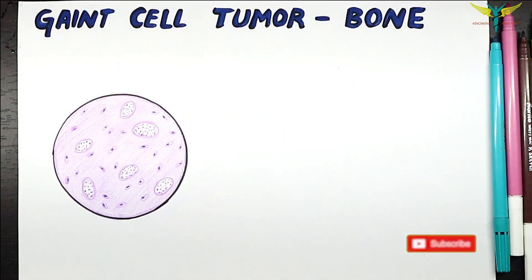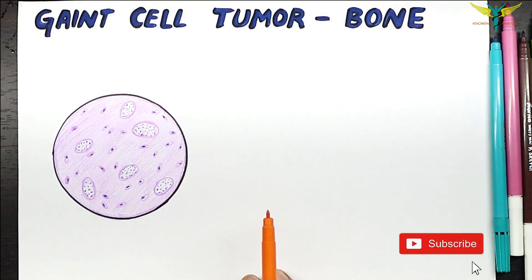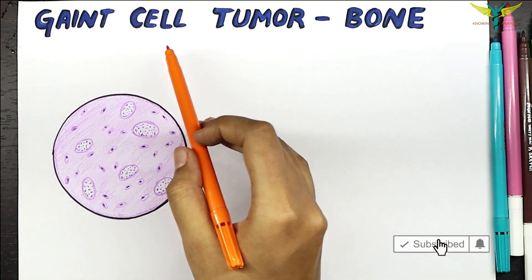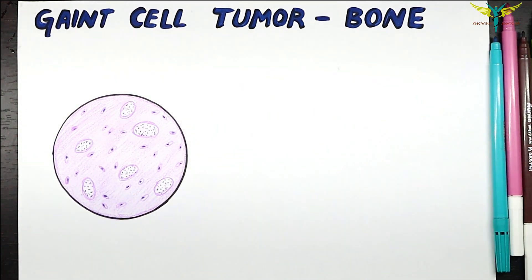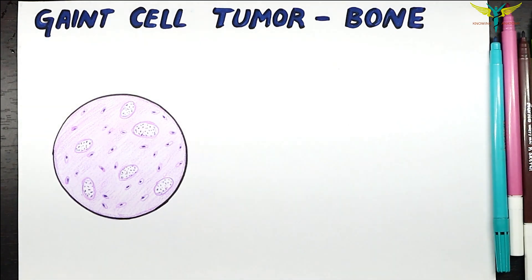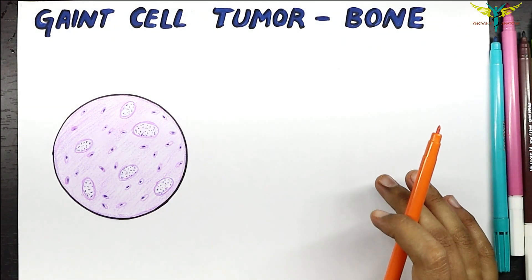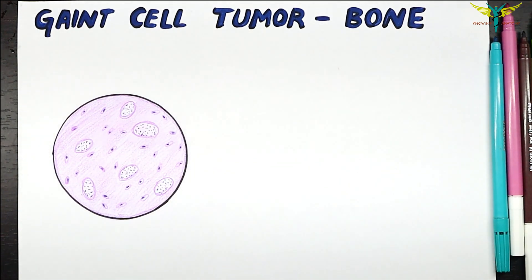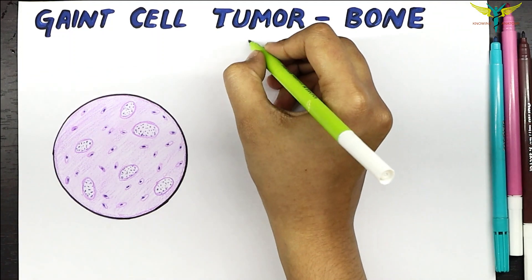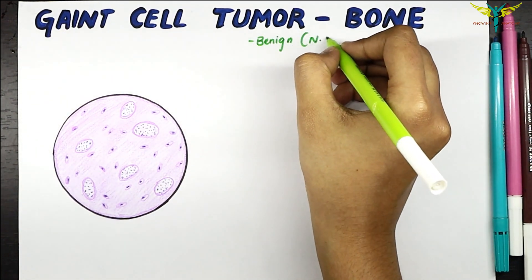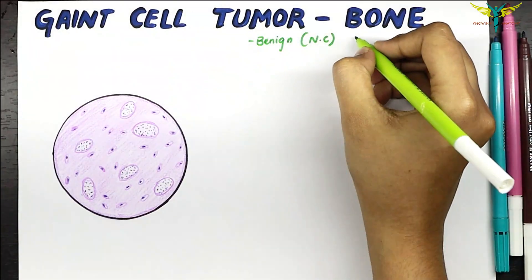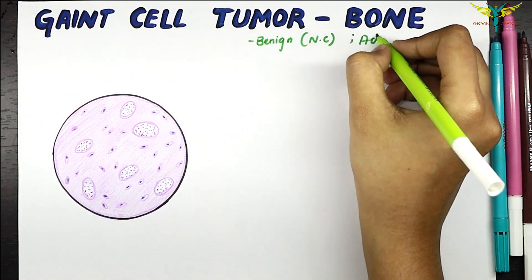In this video, let's learn about the histopathology of the giant cell tumor of the bone. The giant cell tumor of the bone is a type of benign, that is non-cancerous, tumor which generally occurs between the ages 20 to 40. So it is a benign, non-cancerous tumor that arises in adults.